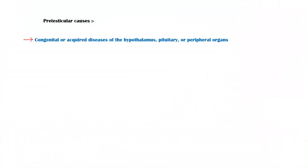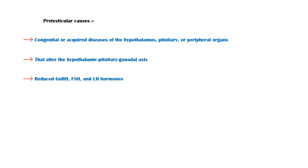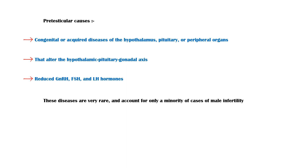Pre-testicular causes of male infertility are congenital or acquired diseases of the hypothalamus, pituitary, or peripheral organs that alter the function of the hypothalamic pituitary gonadal axis. These diseases will manifest as reduced GNRH, FSH, or LH levels, or a combination of hormone deficiency. It is important to know that these disease conditions are very rare and account for only a minority of cases of male infertility.